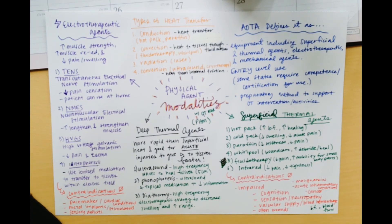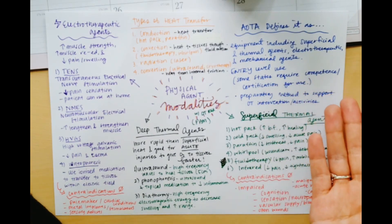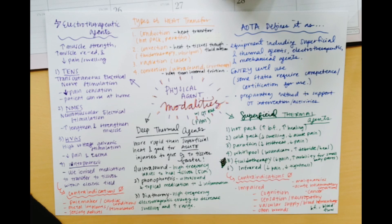Let's start off by what physical agent modalities are. AOTA defines it as equipment including superficial and thermal agents, electrotherapeutic and mechanical agents. Now PAMs can be used at entry level, but some states require additional certification. So you might need to finish a certain level of competence or a PAM certification to utilize modalities with your patients and clients. I, for example, practiced PAMs all the time when I was in a rotation in Arizona in an outpatient hand setting. But in California, for example, you need to get certification before you can practice this. So depending on the state you're in, that's gonna vary.